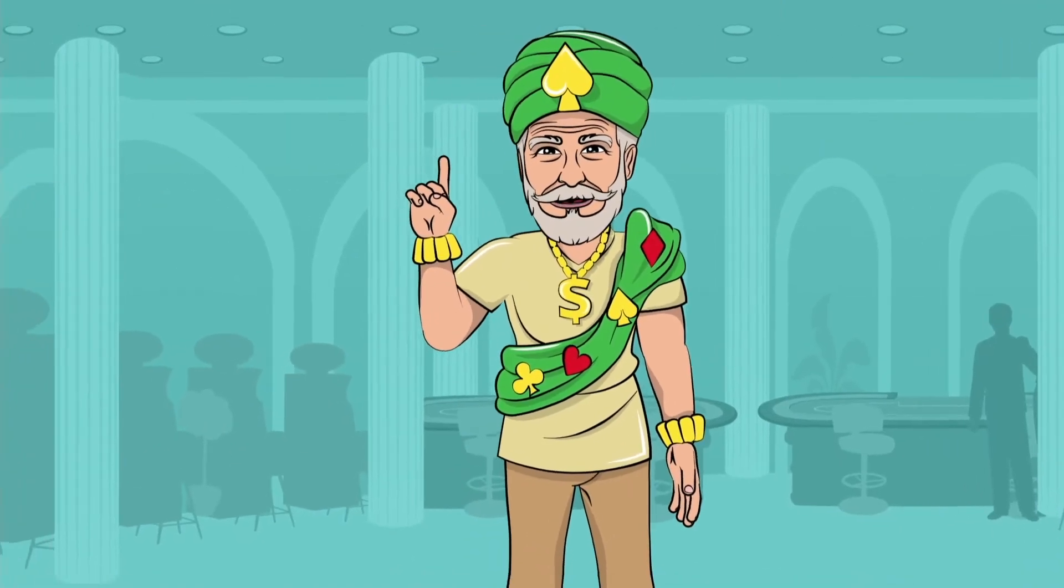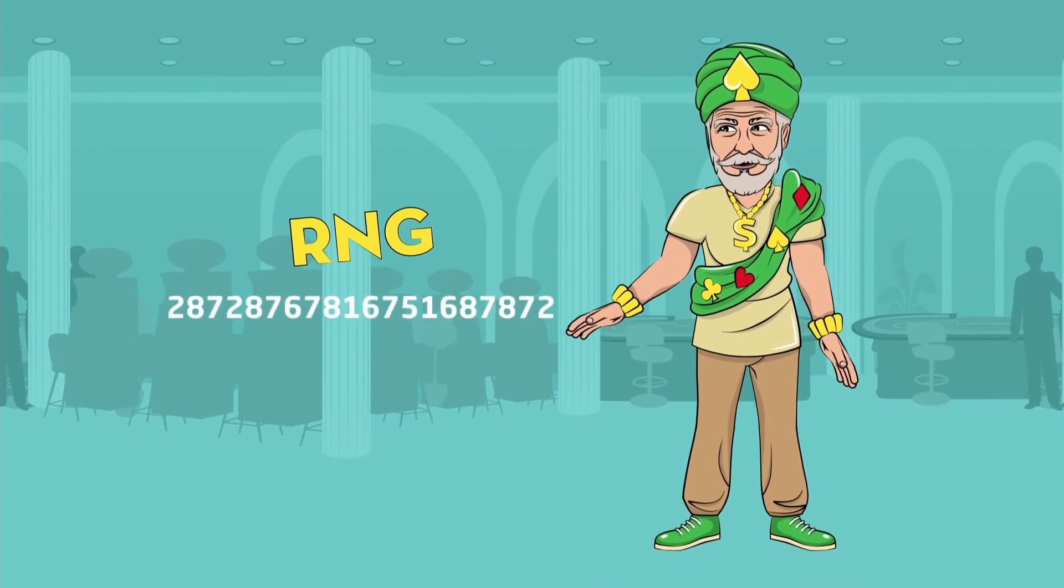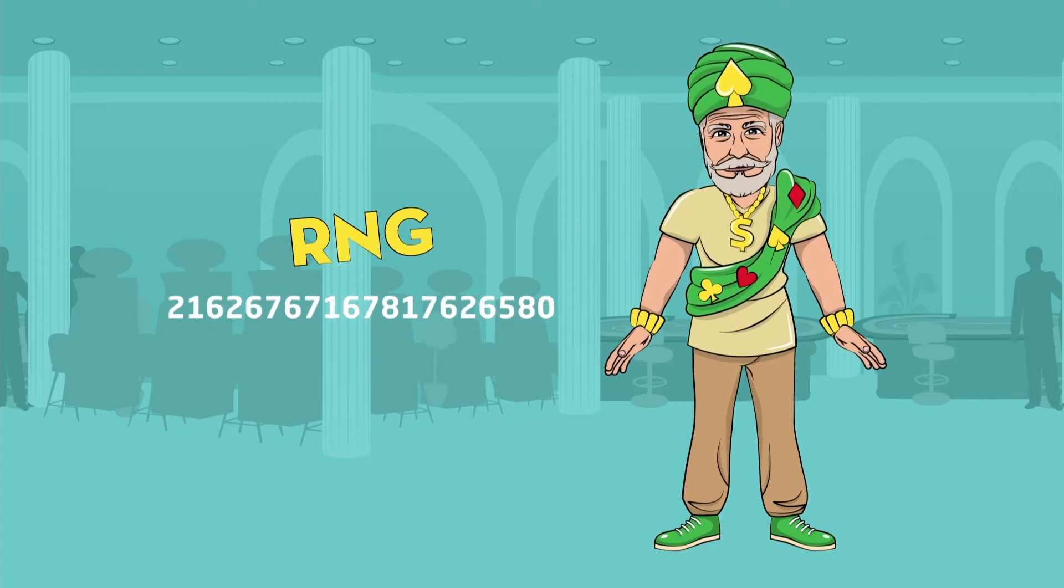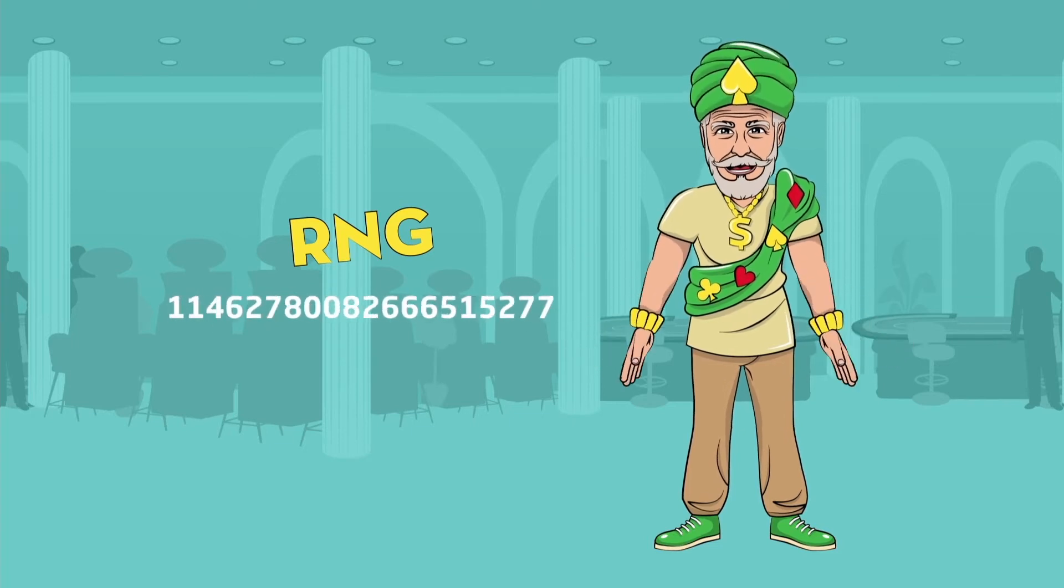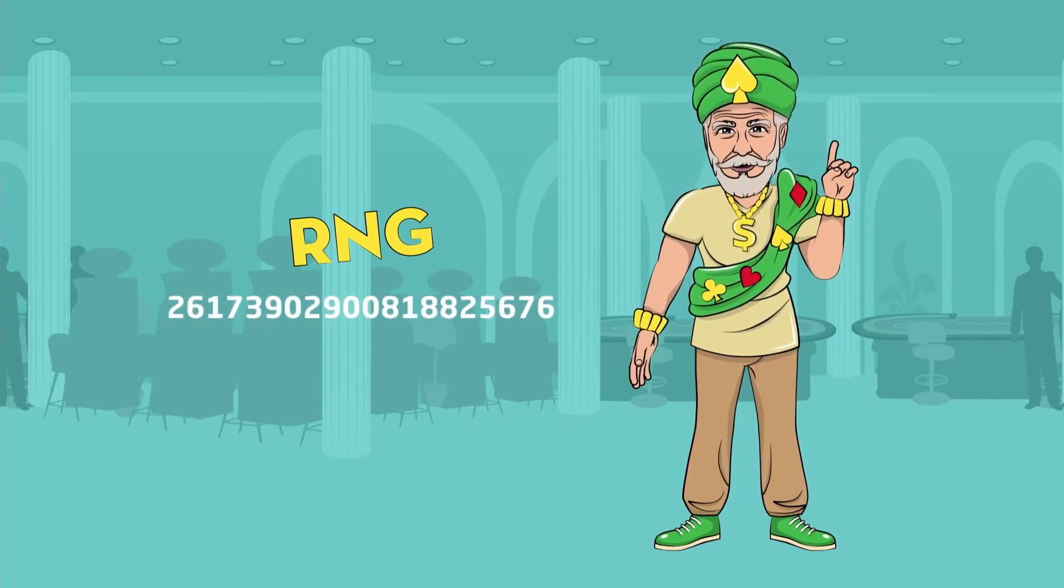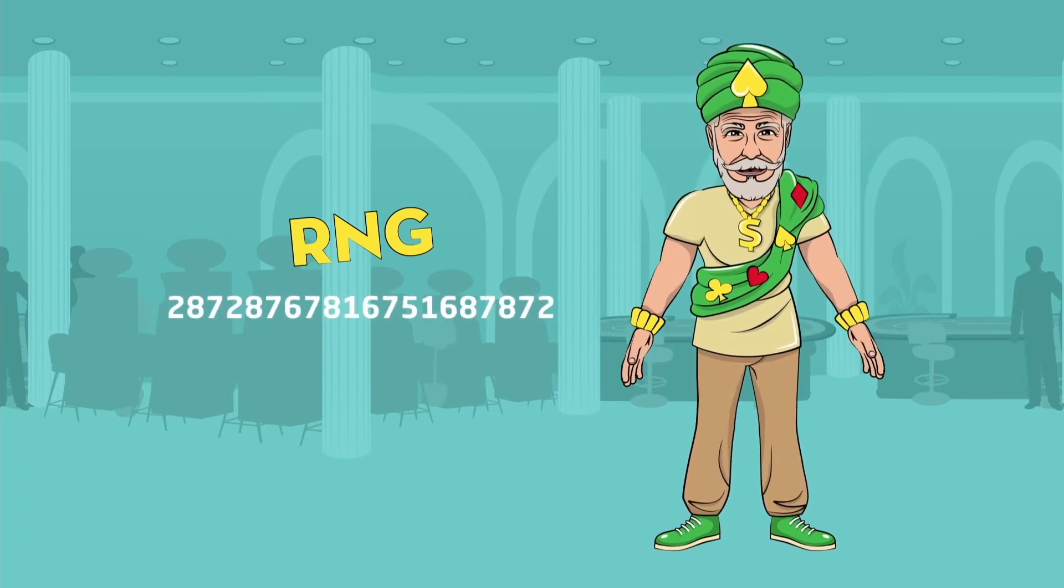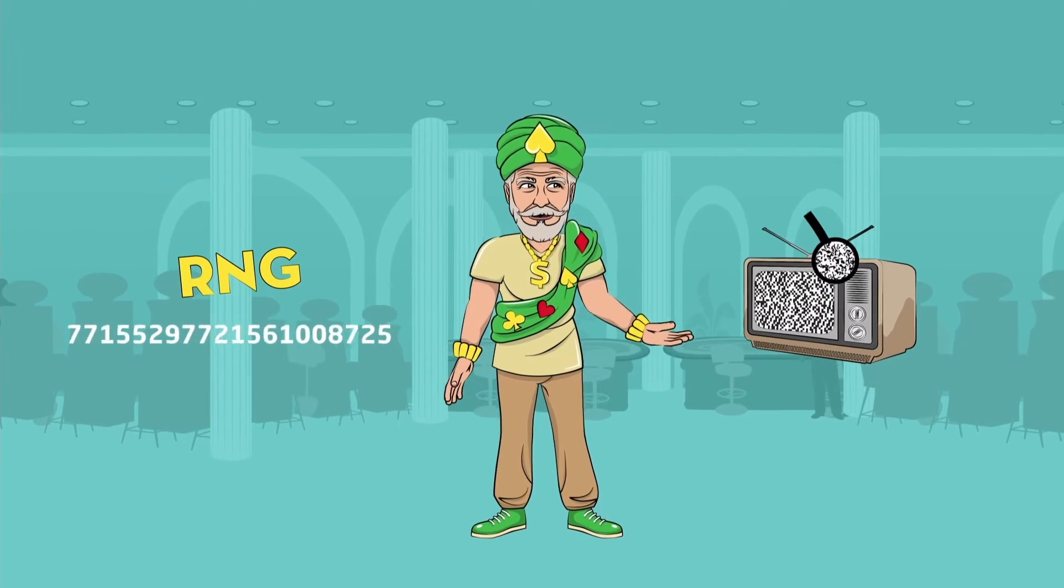Each spin begins with the RNG generating a random number. True random number generators use physical phenomena, such as electromagnetic noise, to generate random numbers, not algorithms. You can visualize this process using the noise that appears on an old CRT screen.